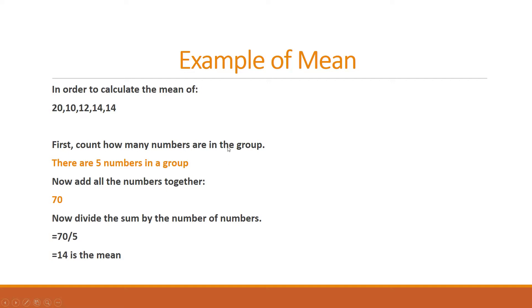So what we did: first we count how many numbers are there in a group, then we add all the numbers, and then total number divided by numbers in a group, that is called the mean.